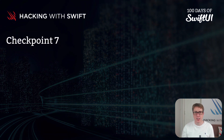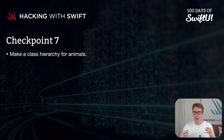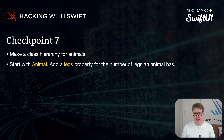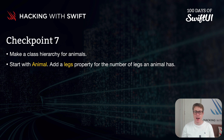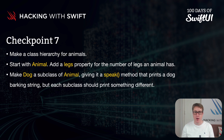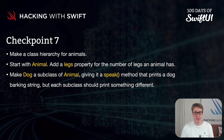This time, your mission is to build out a class hierarchy for animals, starting at the top with an animal class. Give it a legs property to store the number of legs an animal has. You'll then subclass animal with dog, giving dog a speak method that prints a dog barking string, and then create new dog subclasses that print something different.